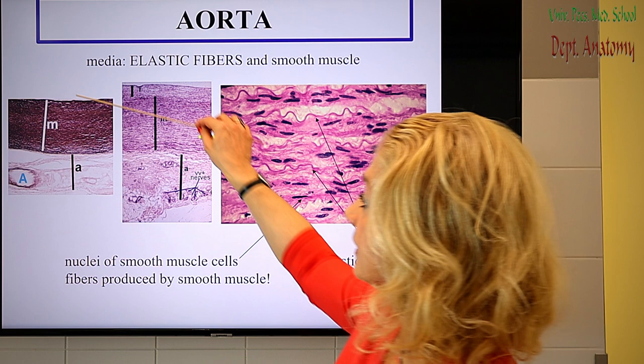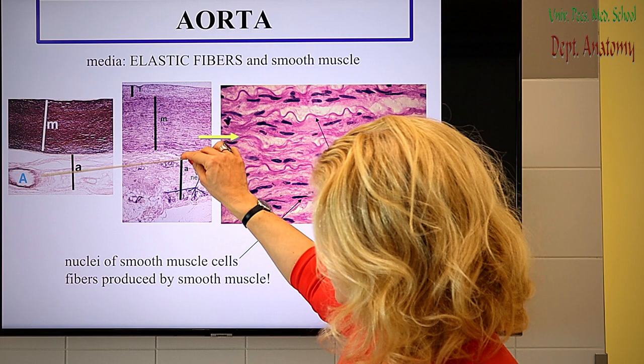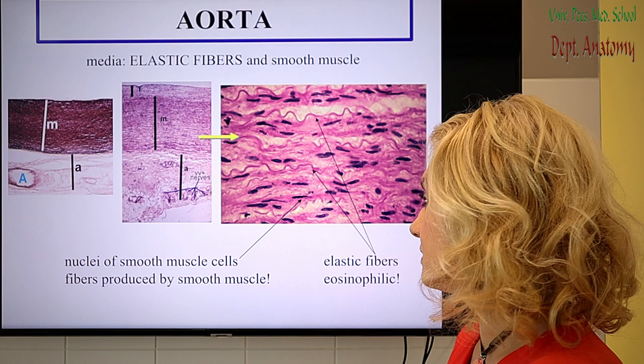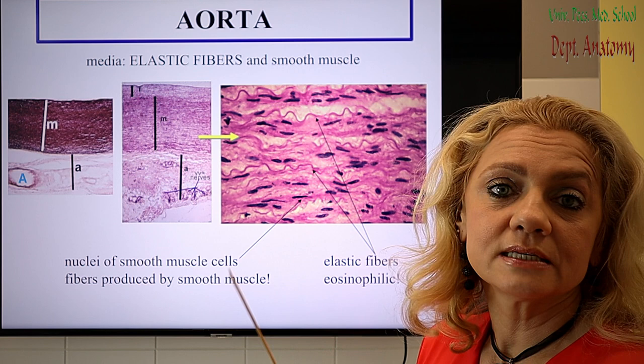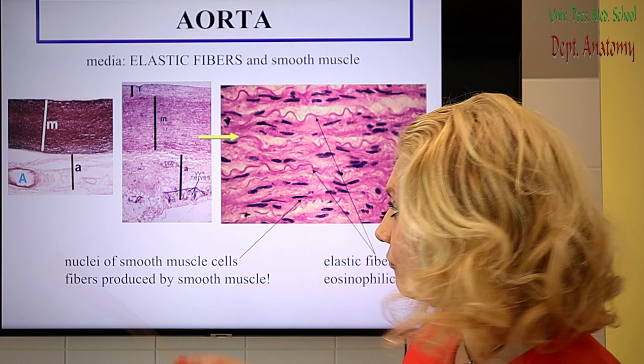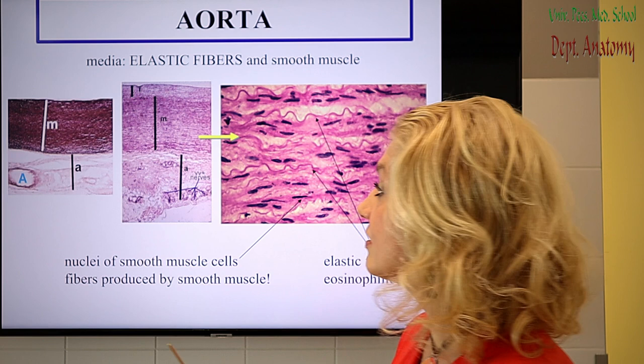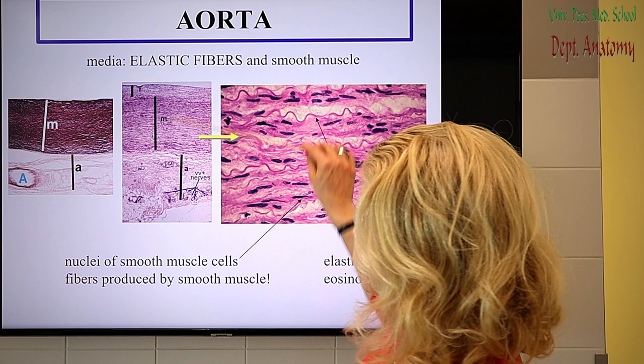Let's start with the aorta. Here again is the slide you are familiar with. With Orcein, only the elastic fibers are stained — this is a specific staining for elastic fibers. You can see the media and the adventitia. Adventitia is loose connective tissue and as such contains some elastic fibers, so it is also stained but more faintly. The intima is very thin or not even visible with Orcein stain.